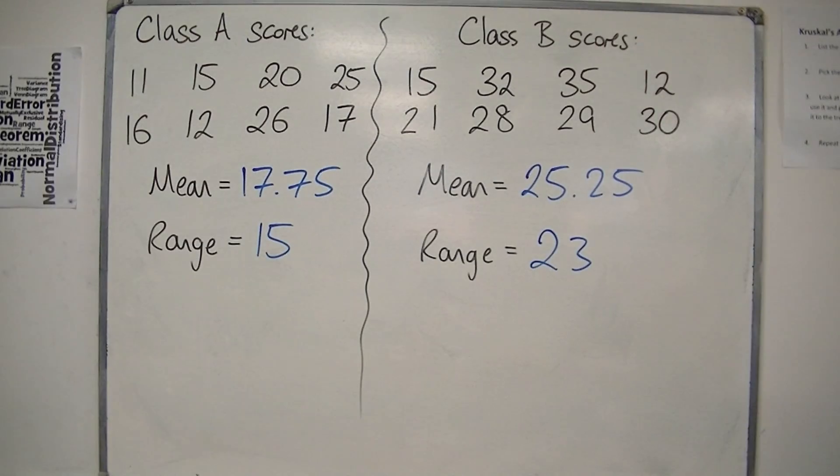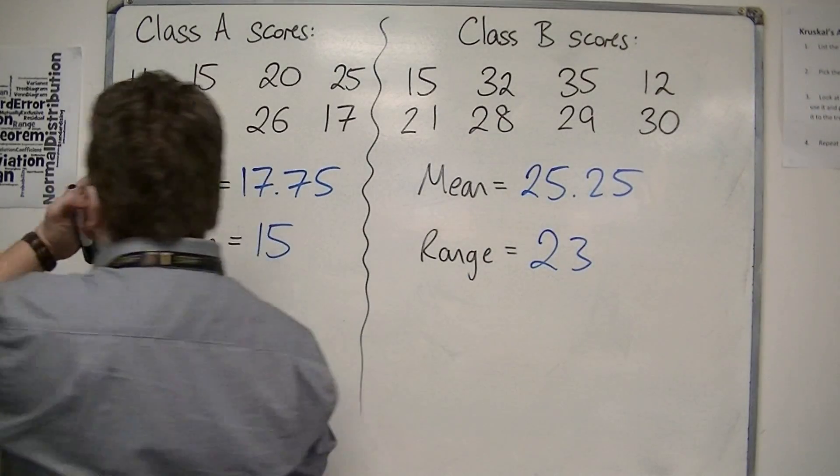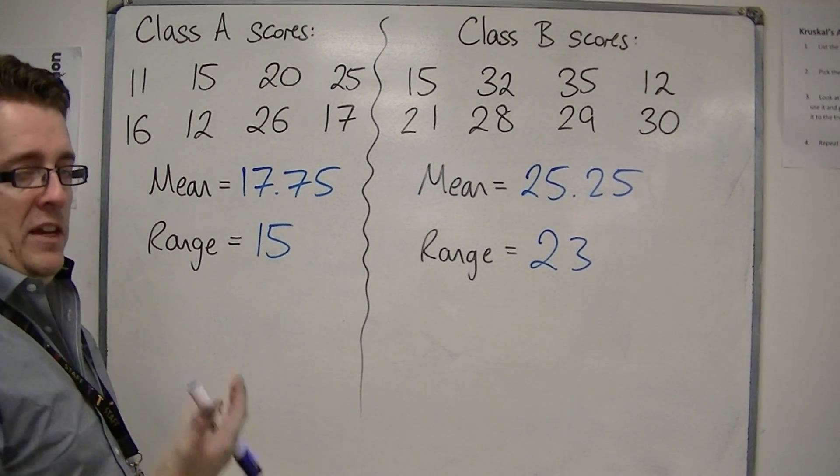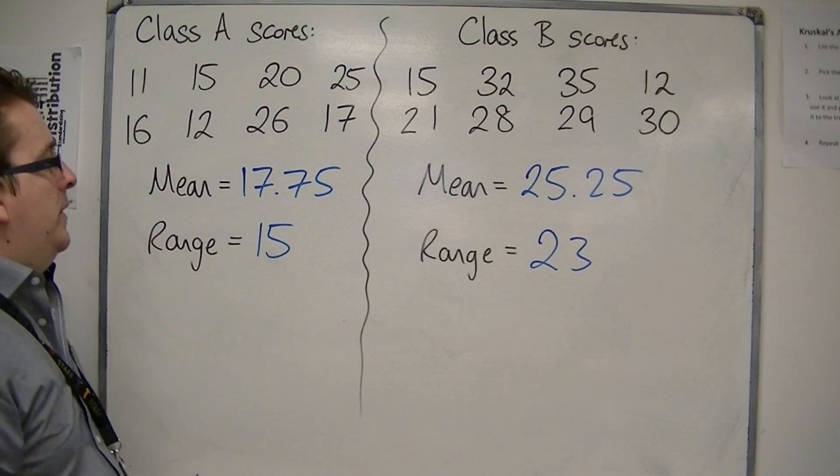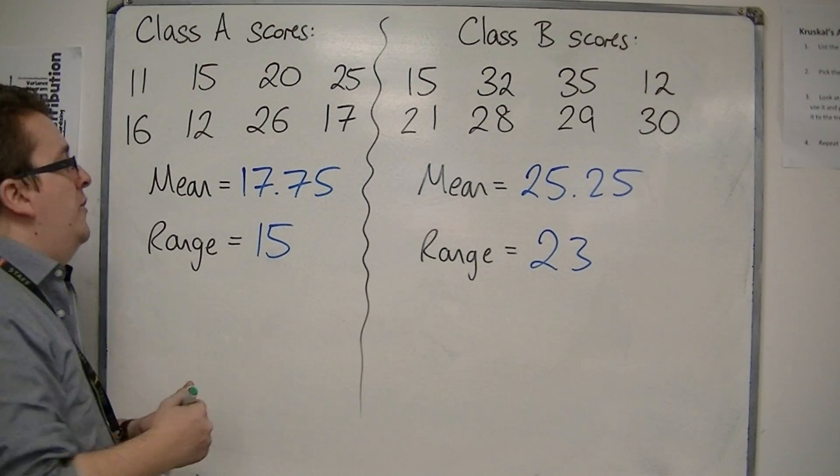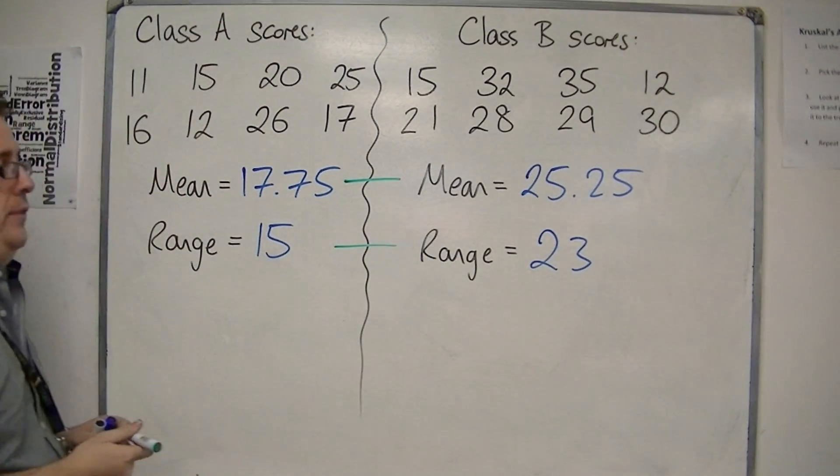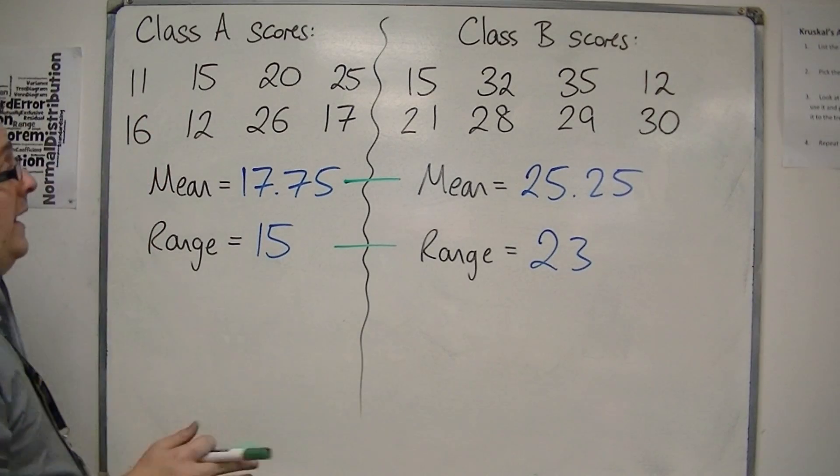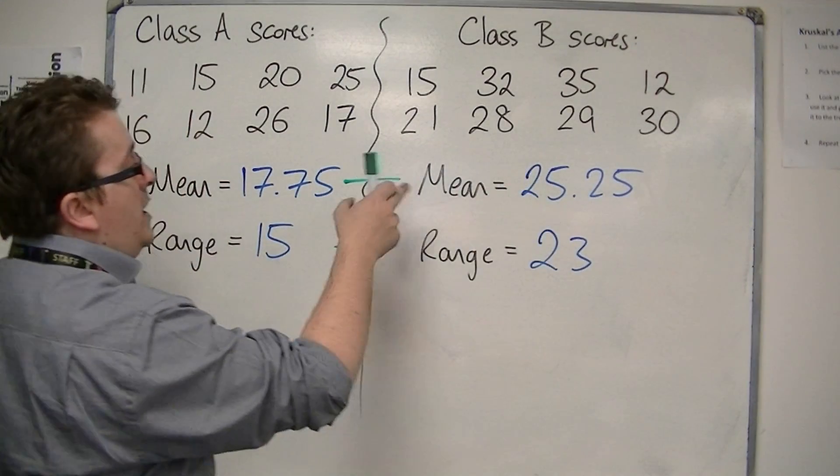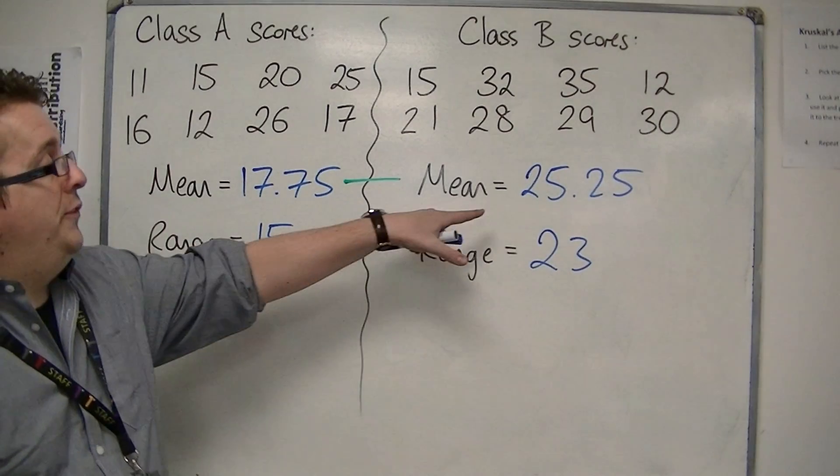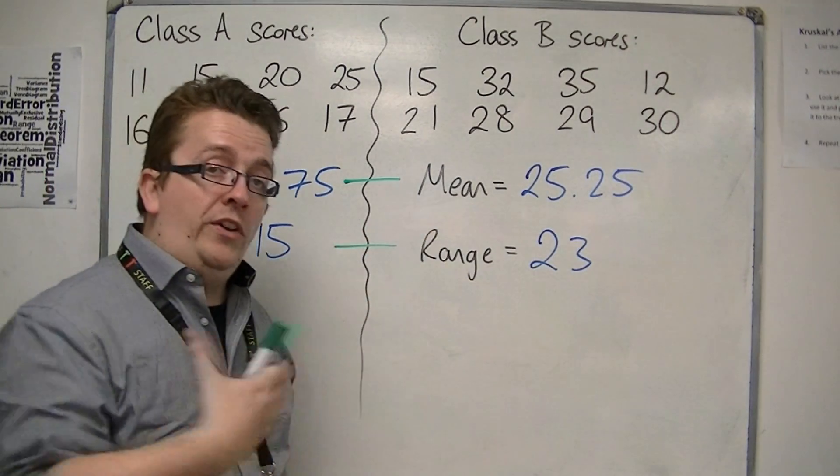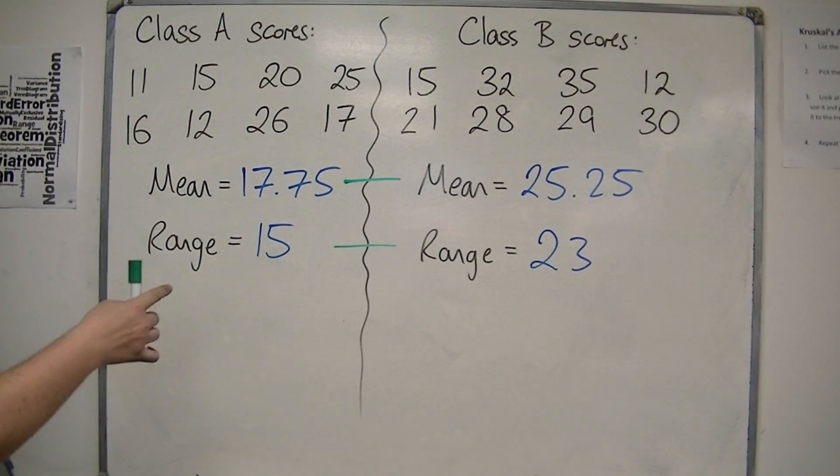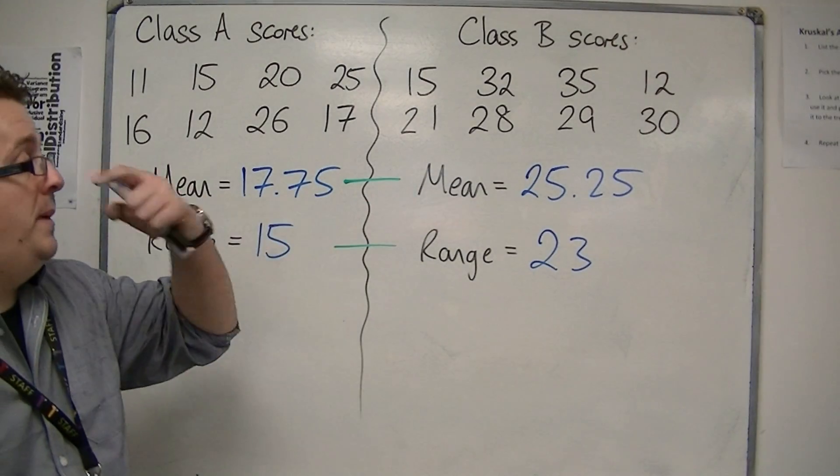So now that we have the mean and the range for both sets of data, and if we're then asked to make two comparisons, we need to make a comparison based on the two means and the two ranges. So if we compare the two means, it is clear that Class B, on average, did better than Class A because their mean average score was higher. The average score is 25.25 compared with 17.75, so Class B clearly did better.